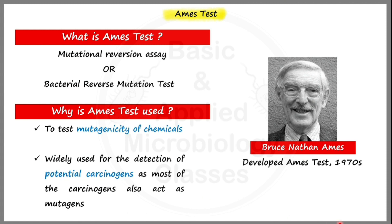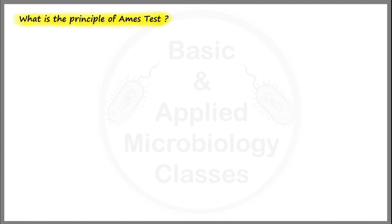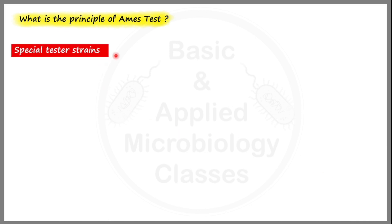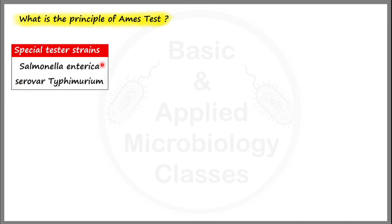That's why the Ames test is even more popular and successful for the detection of potential carcinogenic agents. Now let's talk about the principle of the Ames test. It uses special tester strains of a bacteria named Salmonella enterica serovar Typhimurium. Because of the use of this bacterial strain, the Ames test is also called a microbiological screening test for chemical mutagens.